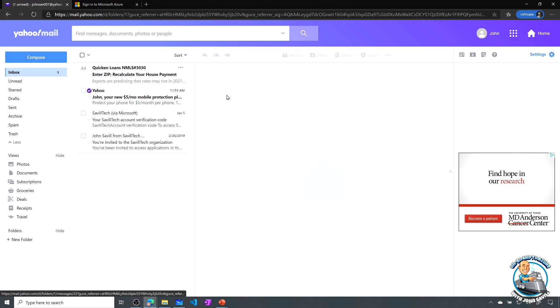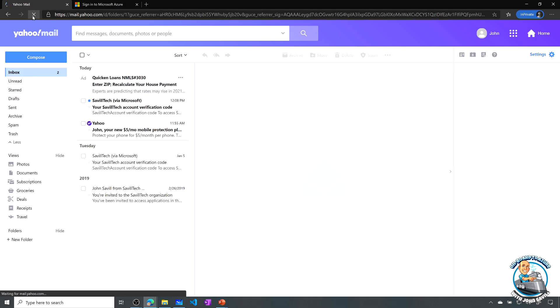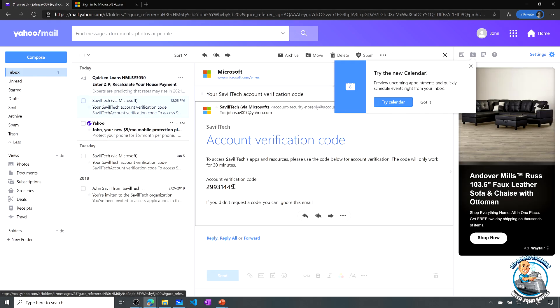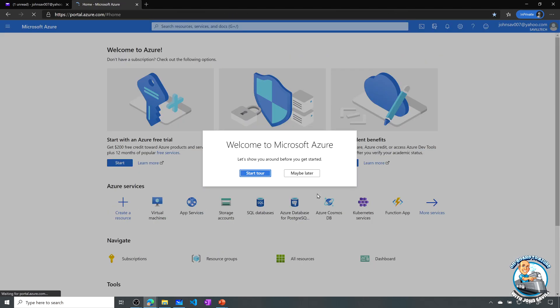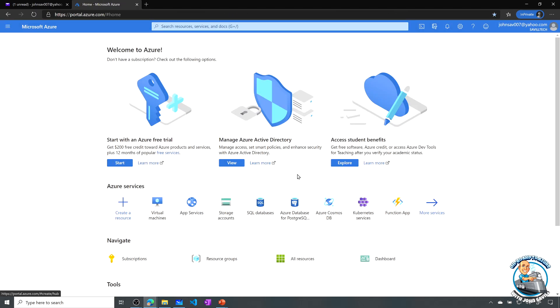So in my Yahoo mailbox, at some point, once I can get through the advertising, I should see that email arrive. So there it is. So they've sent me this one-time passcode. So I can now take that, paste it in, and now I have authenticated.